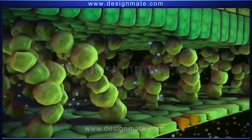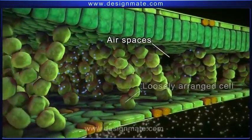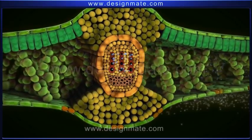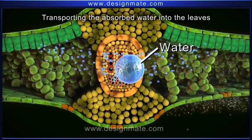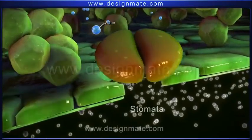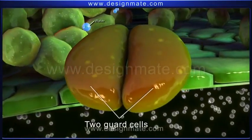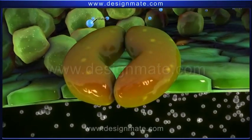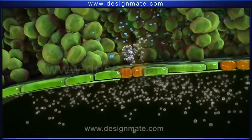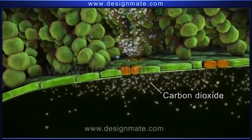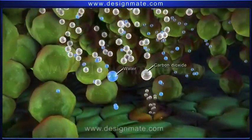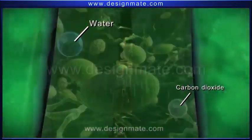The next layer has loosely arranged cells with large air spaces. The section also shows tubes specific for transporting the absorbed water into the leaves. The lower layer has many pores called stomata. Each stoma is surrounded by two guard cells, which regulate opening and closing of the stomata. A leaf absorbs carbon dioxide from the environment through these stomata, which after passing through air spaces enter into the chlorophyll-containing cells.